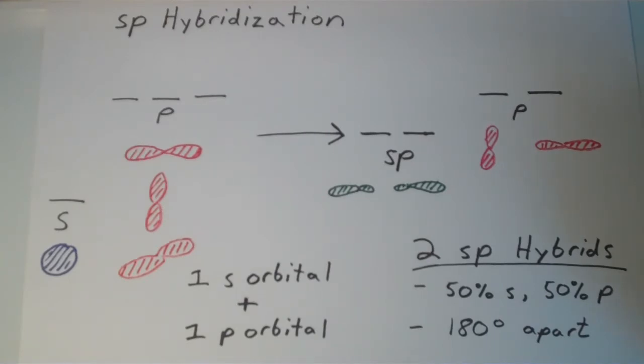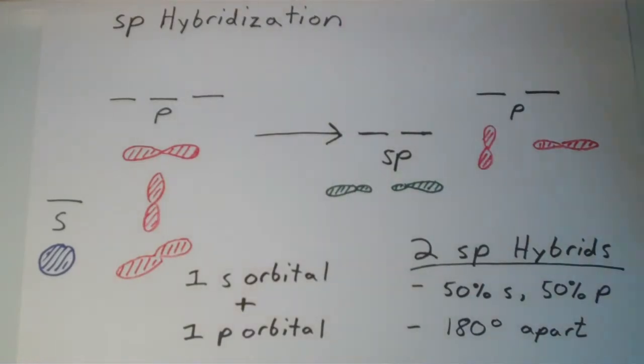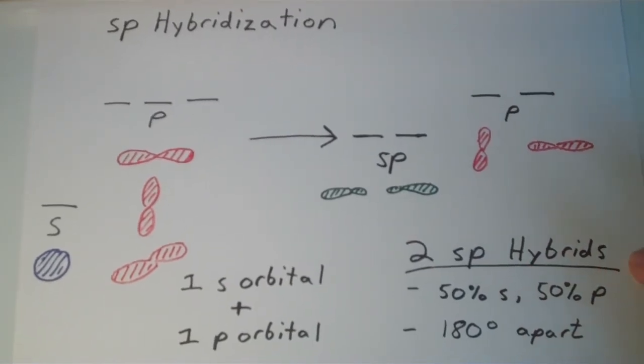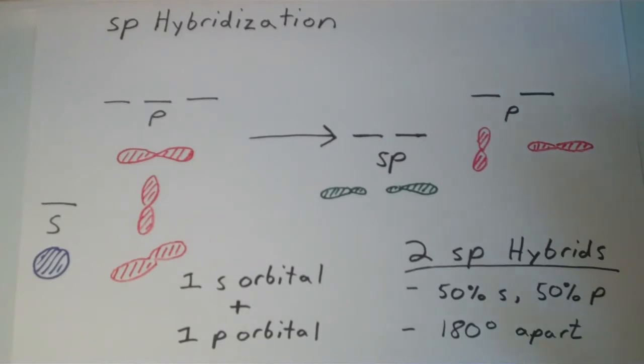Each of those two sp orbitals has 50% s character and 50% p character. Mathematically, it turns out that those orbitals are 180 degrees apart from one another. So any sp hybridized atom is going to have a linear geometry around it, 180 degrees apart.